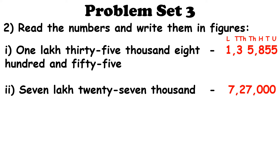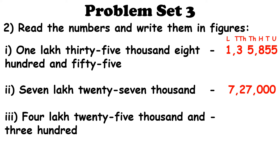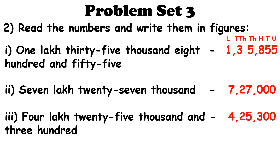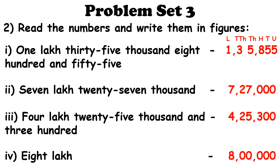Our second sum is 7,27,000, written as 7,27,000 because there are no other digits after 27,000, so we fill the remaining spaces with 0. Third question: 4,25,300, written as 4,25,300. One last example: 8 lakh — since there is only the digit 8, the rest of the places are filled with 0, giving 8,00,000, which is read as 8 lakh.